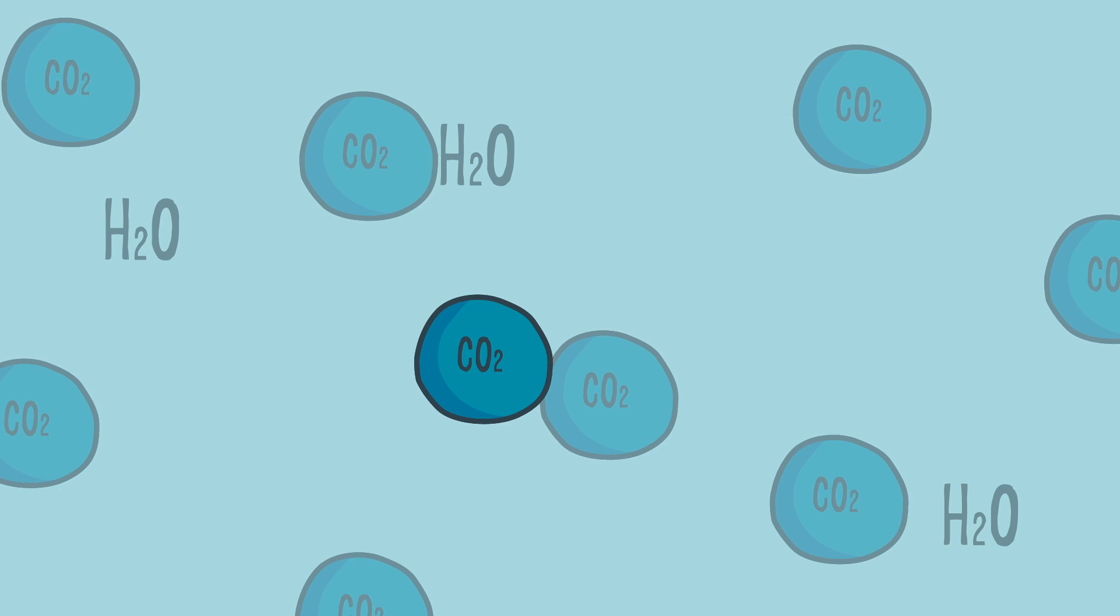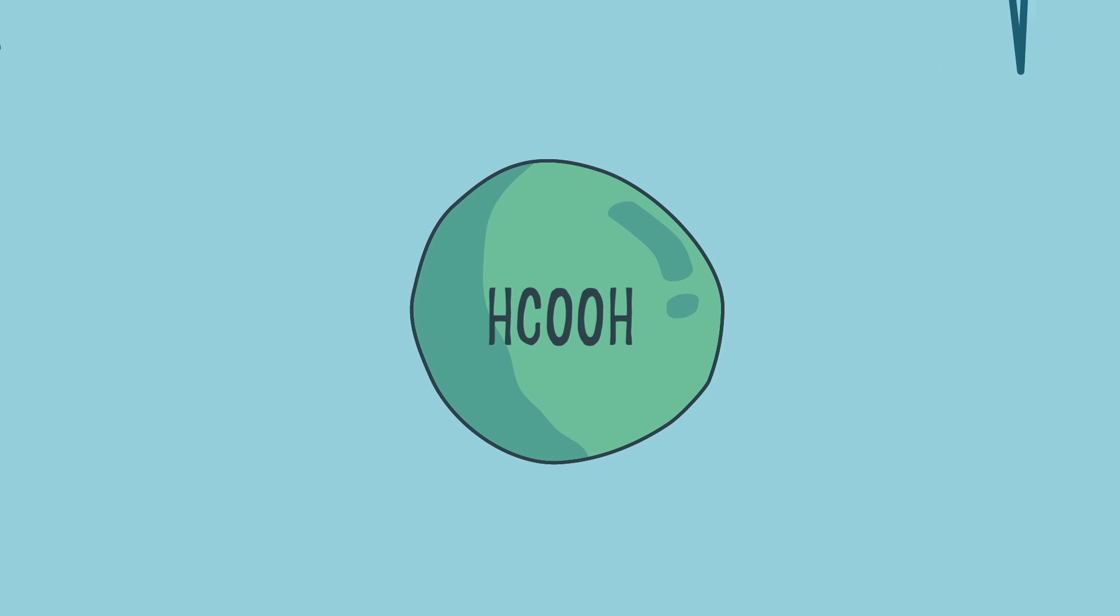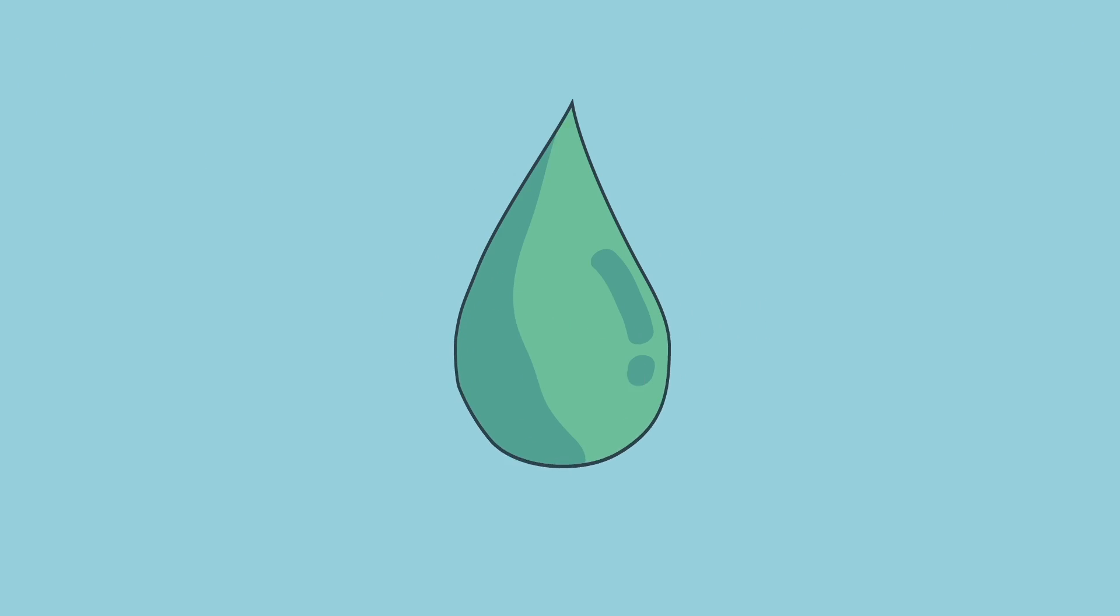First, we combine CO2 and water. Now, run electricity through it and oxygen starts to escape. What you have left is formic acid, a liquid.